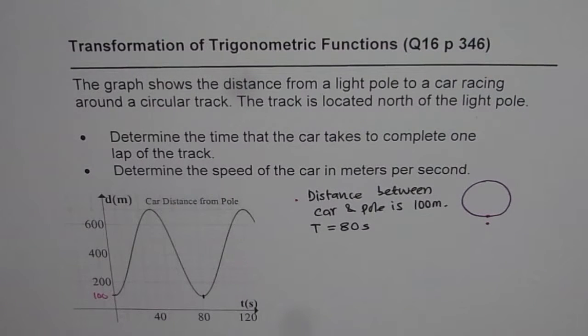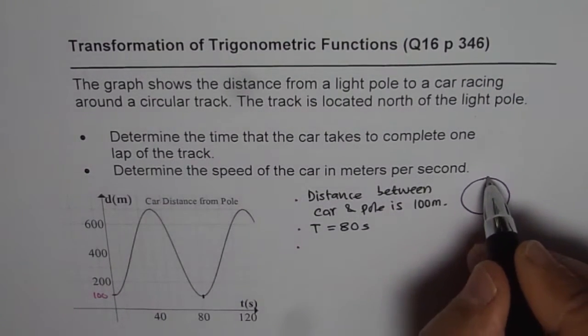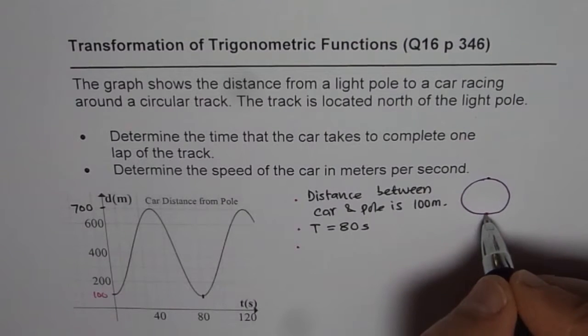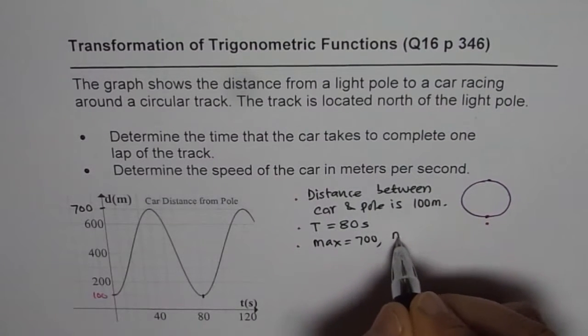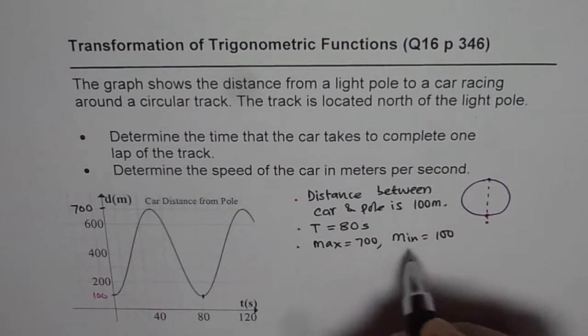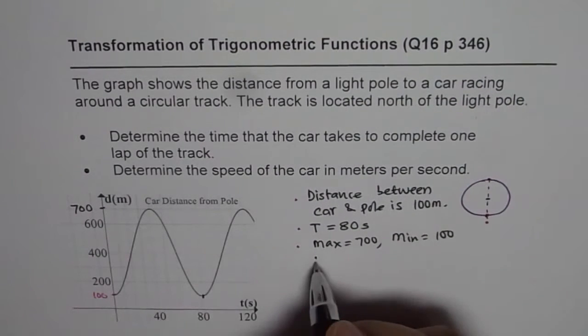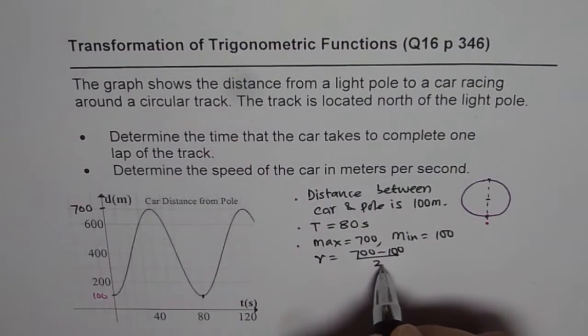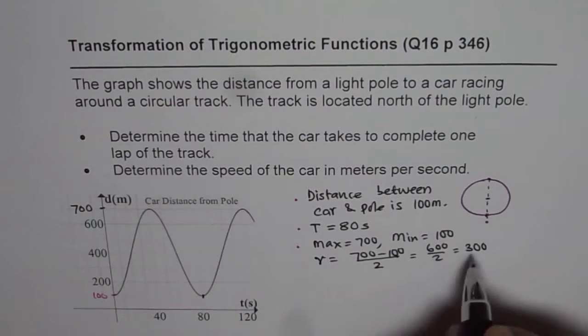Now, since what we also observe here that the maximum distance which the car is away is around 700 meters, it is 700 meters and the minimum is 100. So what we have here is that the maximum distance is 700, minimum is 100. So the diameter is 600. We can say the diameter is 600 or half of that will be the radius. So we can say radius is 700 minus 100 divided by 2. That gives us 600 divided by 2 or 300. So the radius is 300 for us.